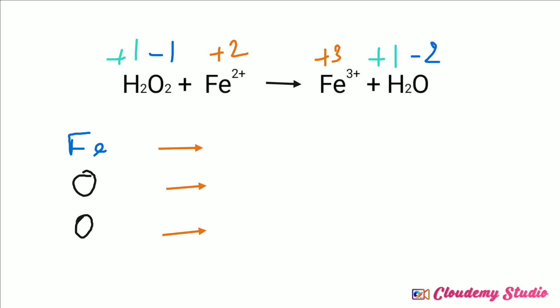I have already noted the oxidation numbers of the atoms present in the equation. If we analyze the oxidation numbers, there is a change in the case of iron and oxygen. For iron, the oxidation number changes from plus 2 to plus 3. So there is an increase in oxidation number — that is oxidation. The increase is from plus 2 to plus 3, so the difference is plus 1.